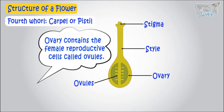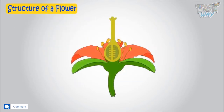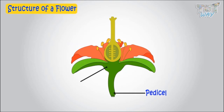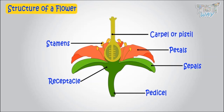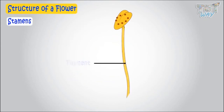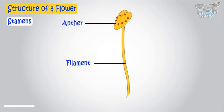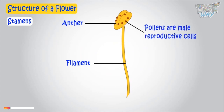Now let's revise the structure of a flower. This is the pedicel, which is a green color stalk. Then this broader part is the receptacle. All other parts are arranged in four whorls: first, green sepals; second, colorful petals; third, stamen — the male reproductive part; fourth, carpel or pistil — the female reproductive part. The stamen consists of a long stalk called the filament and a swollen head called the anther, which consists of numerous very small pollens — the male reproductive cells.